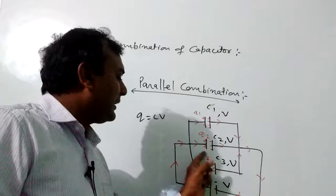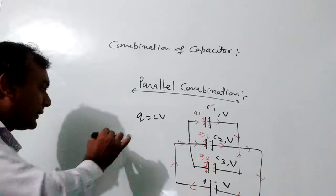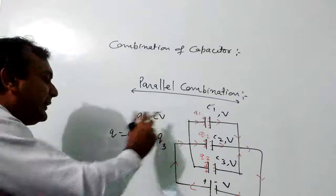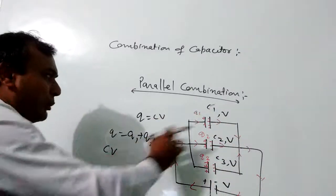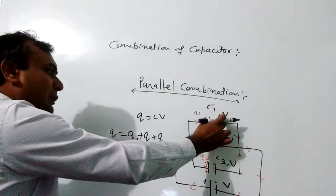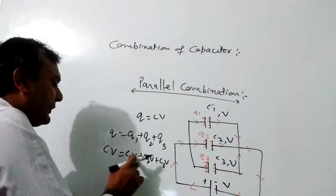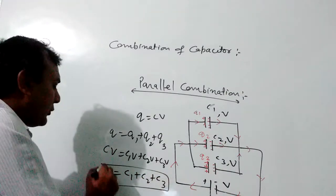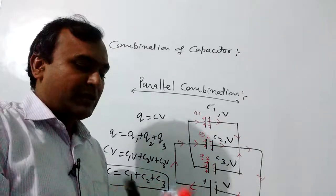Q1, Q2, Q3 — the total charge Q is equal to Q1 plus Q2 plus Q3. The equivalent capacitance C times V equals the total charge. So Q1 equals C1 into V, Q2 equals C2 into V, Q3 equals C3 into V. Taking V as common: C_equivalent equals C1 plus C2 plus C3. This is the formula for equivalent capacitance in the parallel combination of capacitors.